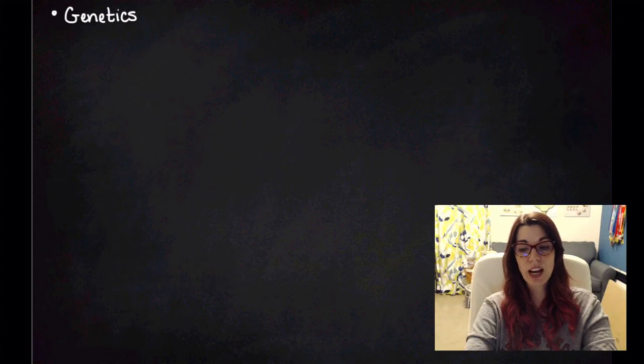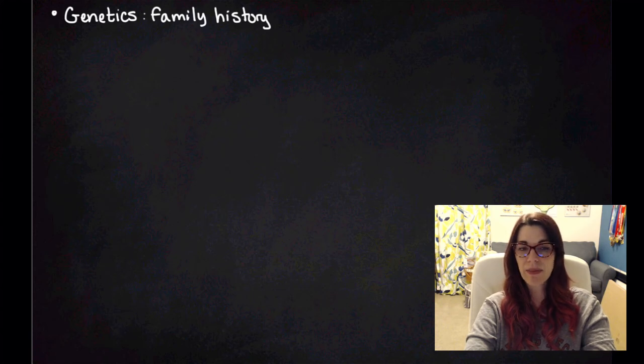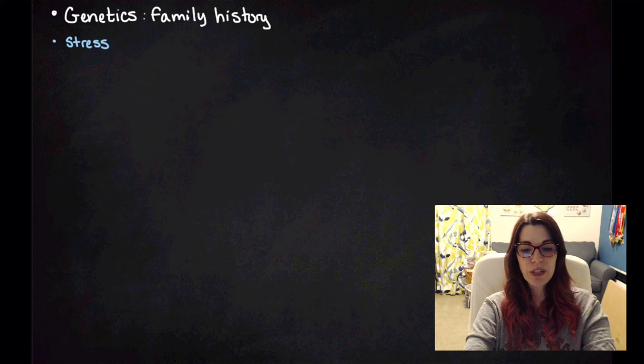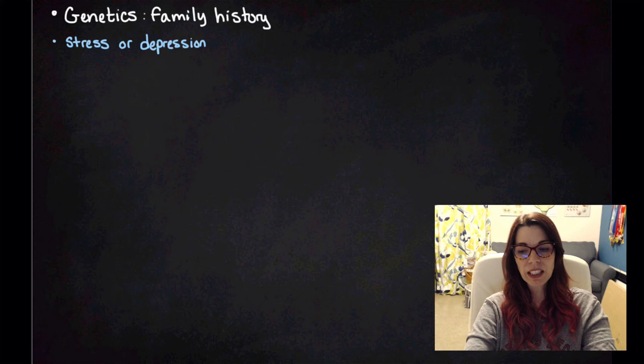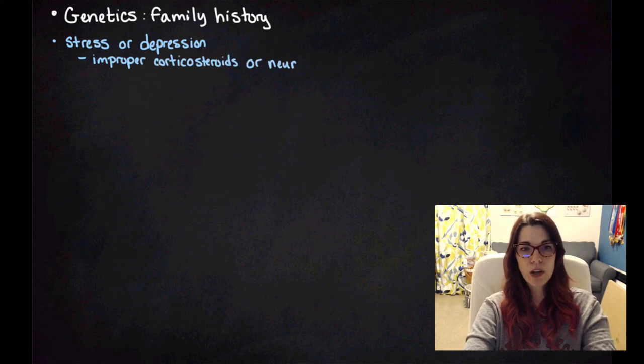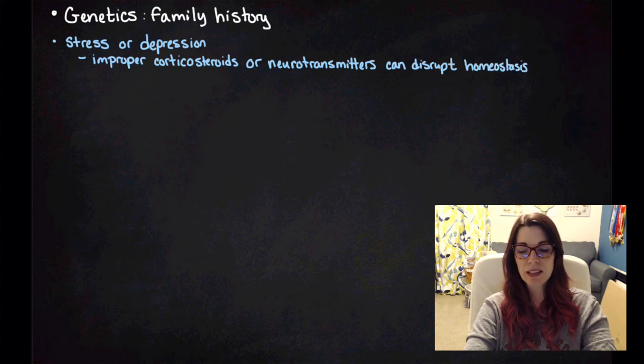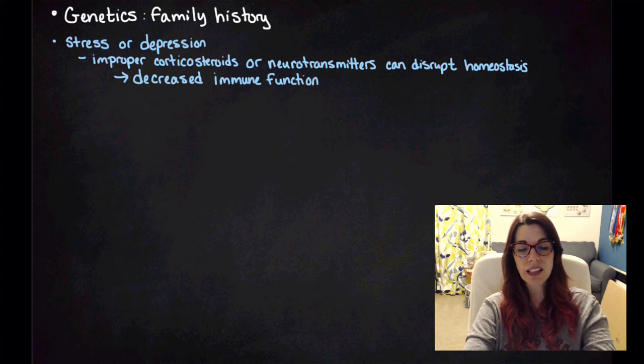The third risk factor is genetics, and that is simply family history of a disease. That's all for genetics. The fourth risk factor is stress or depression. Stress and depression affect the body differently, but they both lead to increased risk. You end up getting improper corticosteroid or neurotransmitters, and that can disrupt homeostasis and give you decreased immune function, which can lead to a higher probability of contracting a disease.